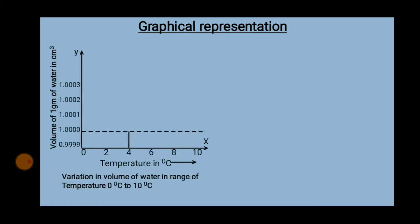We can understand the anomalous expansion of water by graphical representation. The figure shows the variation in volume of 1 gram of water with temperature in the range from 0°C to 10°C. The volume of water first decreases on heating from 0°C to 4°C and then increases on further heating from 4°C to 10°C. The volume of water is thus minimum at 4°C.